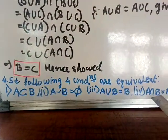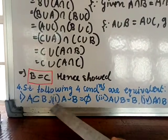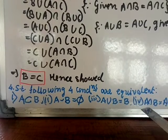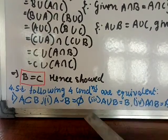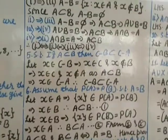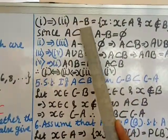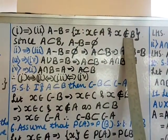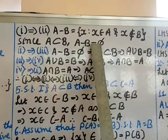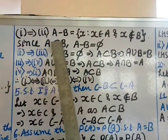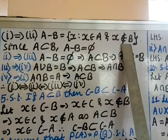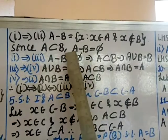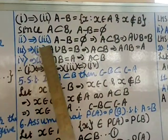Question number four: show that the following four conditions are equivalent — (1) A ⊆ B, (2) A - B = ∅, (3) A ∪ B = B, (4) A ∩ B = A. Proof that (1) implies (2): A - B = {x : x ∈ A, x ∉ B}. Since A ⊆ B, every element of A is in B, so no element of A is outside B. Therefore A - B = ∅.